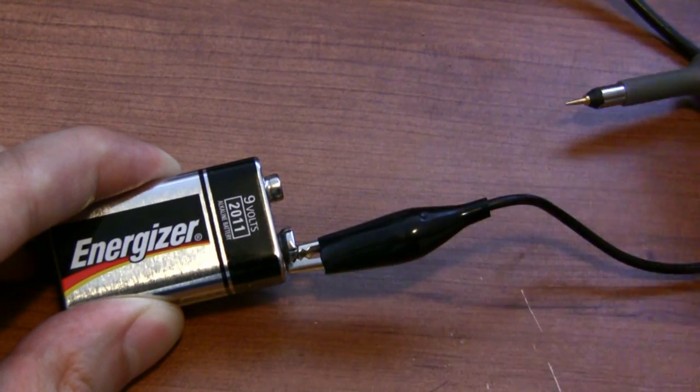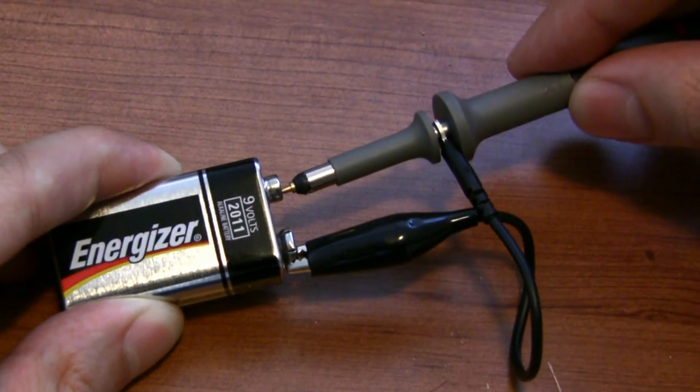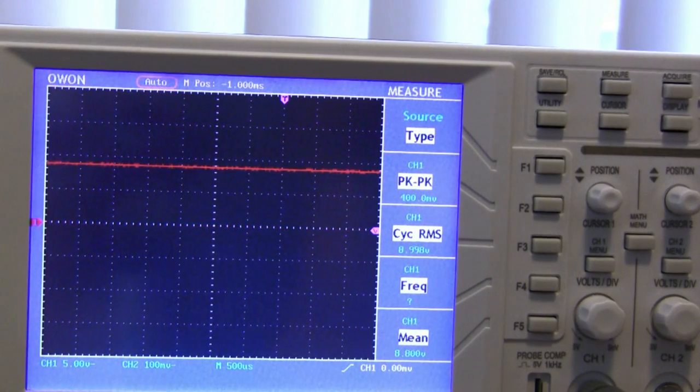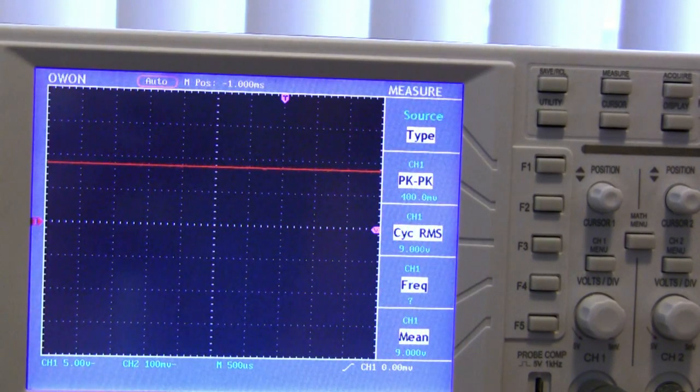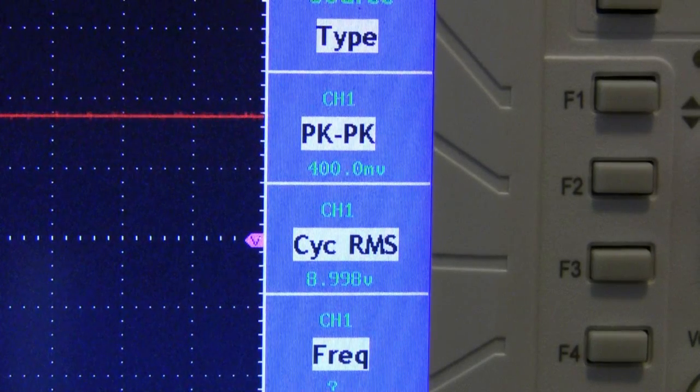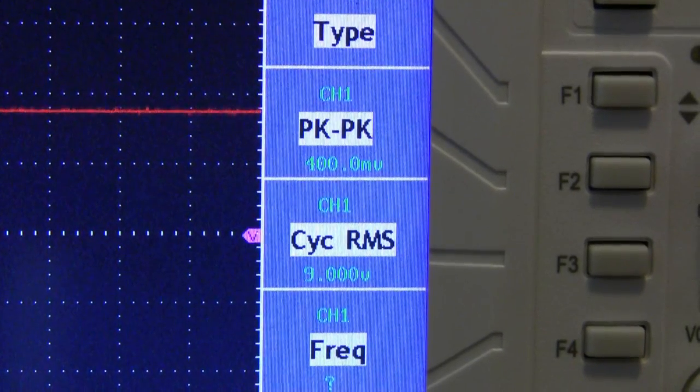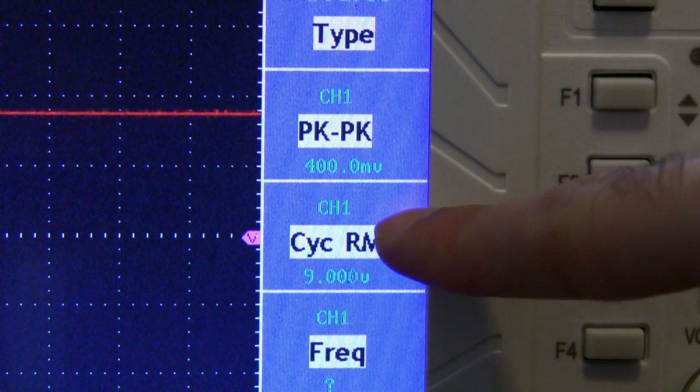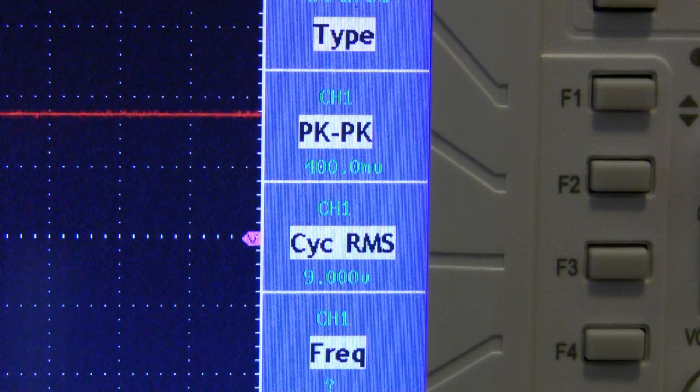For the sake of example here, I'm going to hook up my probe to a 9 volt battery. You can see how the line jumped up to show the presence of a DC voltage. If we count the number of vertical divisions, we can see that the voltage being shown is roughly 9 volts. Also since I have a digital oscilloscope, I can see that it's doing the measurement for me.